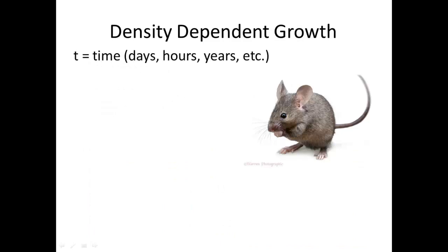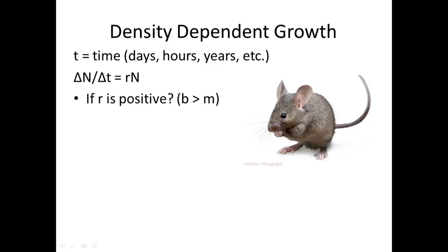To understand this over time, we look at t. The change in population — delta N over change in time — equals the per capita rate of increase, r, times the number of individuals N. If r is positive, you're going to have positive growth and birth rate will exceed mortality rate. If r is negative, then it's the opposite.